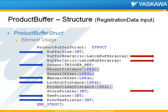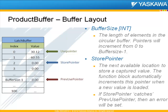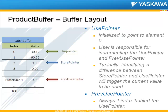There's nothing inside the product buffer block that does anything with the three elements for sensor distance, sensor offset, and product away distance — those are for use elsewhere in the program. The buffer size is the length of elements in the buffer; pointers will increment starting from zero up to buffer size minus one. The storage pointer is the next available location to capture, and the function block will automatically increment this pointer when a new value is loaded. If the storage pointer ever catches up to the previous use pointer, it signifies a wrap-around condition where elements have not been consumed as fast as they've been put in, and that will generate an error for the block.